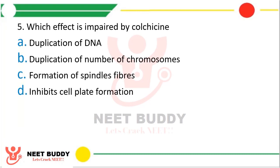Question 5: Which effect is impaired by colchicine? Option A: Duplication of DNA. Option B: Duplication of number of chromosomes. Option C: Formation of spindle fibers. Option D: Inhibits cell plate formation. The correct answer is Option B — colchicine inhibits the duplication of the number of chromosomes.